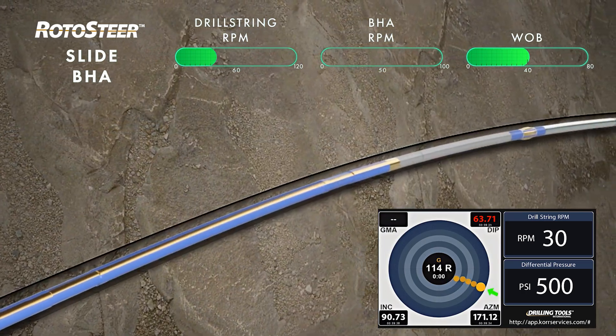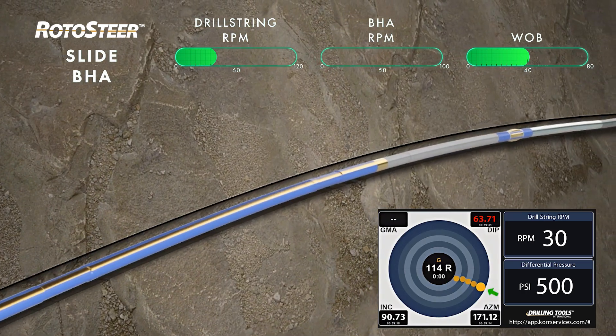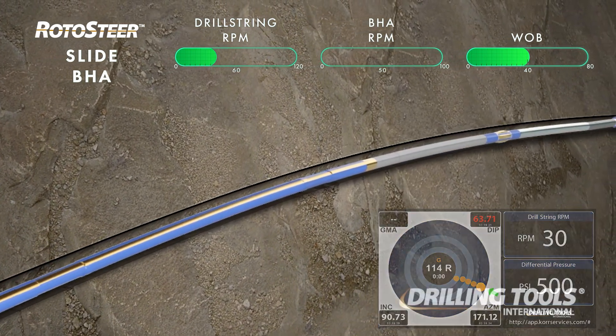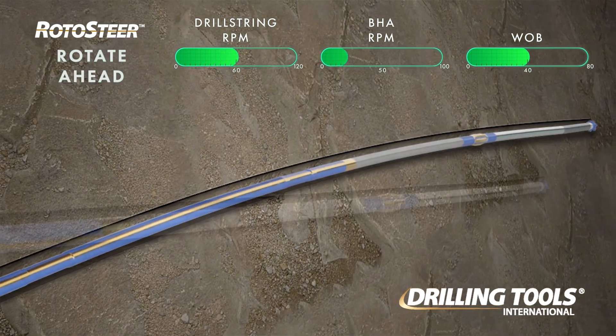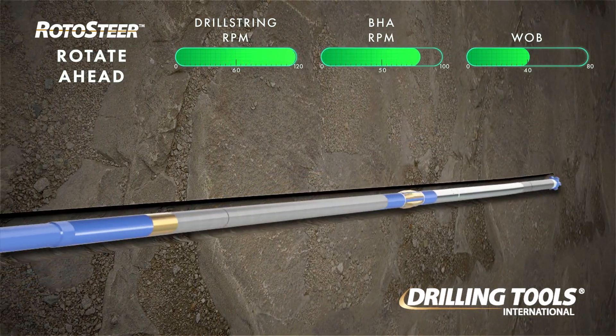Return to rotation is simple with a gradual increase in RPM back to previous values before sliding.